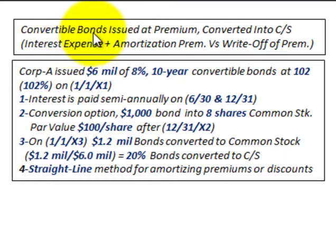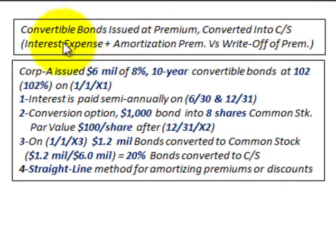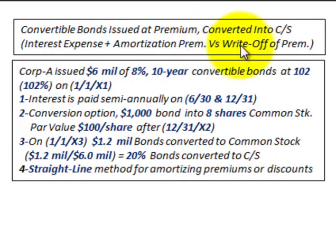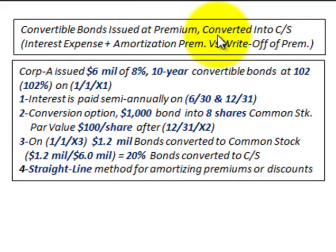What we're going to be looking at here are convertible bonds that are issued at a premium and they're going to be converted into common stock. We're going to be looking at the interest expense on these bonds, the amortization of the premium versus the write-off of the premium when we convert these bonds into common stock.